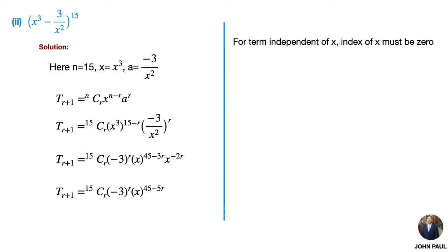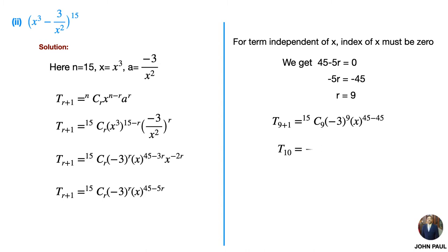For the term independent of x, the index of x must be 0. We get 45 − 5r = 0, giving r = 9. By substituting we get T10 = −15C9 · 3⁹. The minus sign appears because (−3)^9 has an odd power. Therefore the term independent of x is −15C9 · 3⁹.